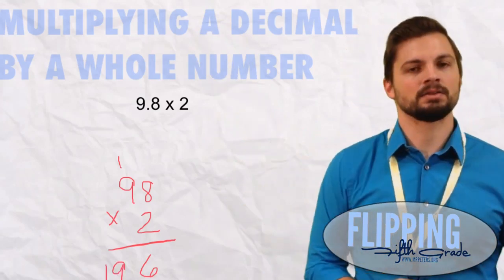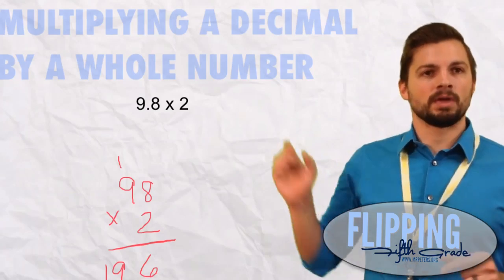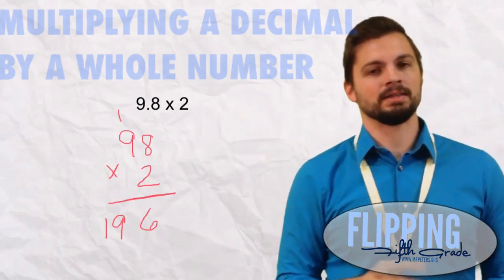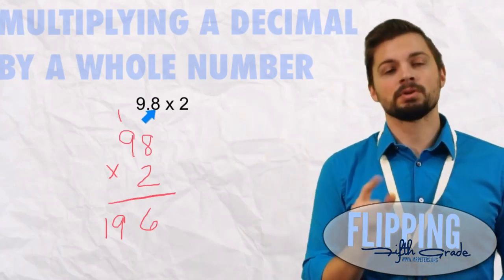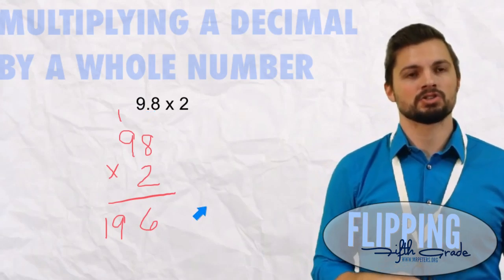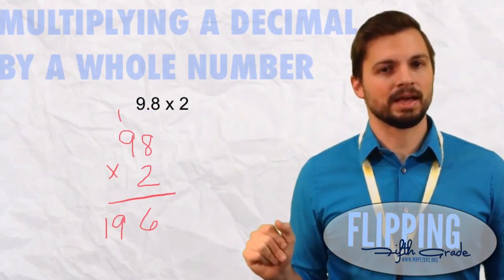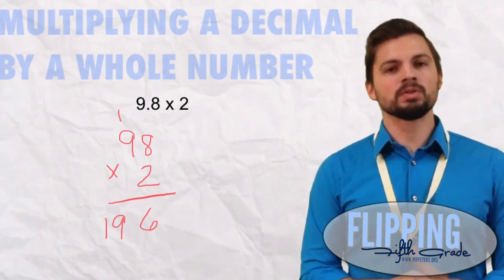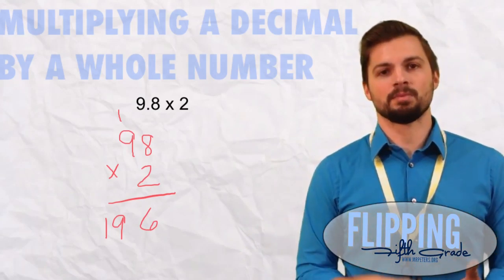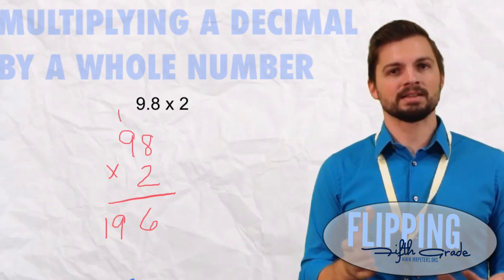Now let's flip back to the original problem. We have one digit behind the decimal, that 8. So in our answer we need one digit. I'm just going to start to the right and move one digit to the left and put my decimal there. That's the only different step when you're multiplying by a decimal.